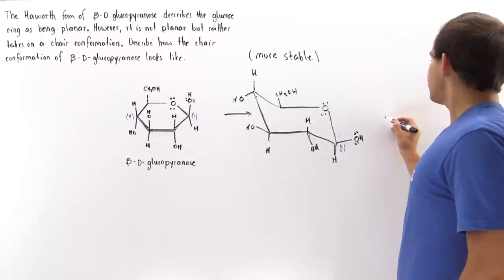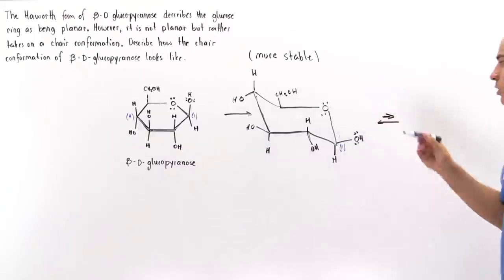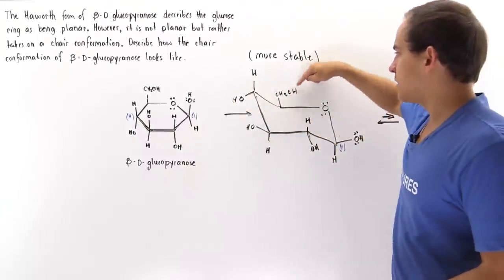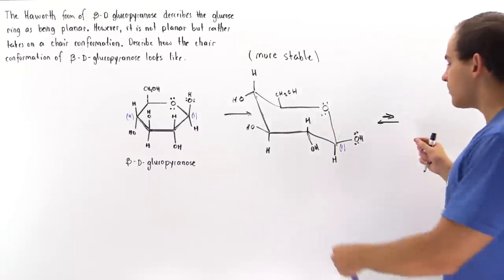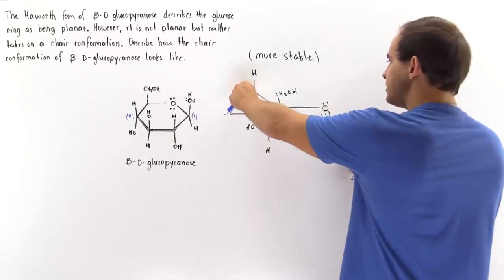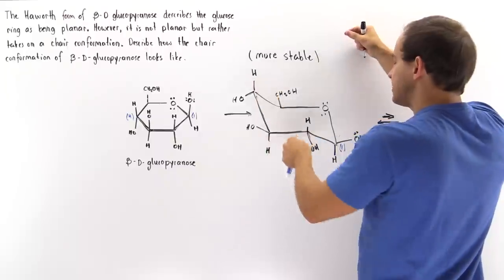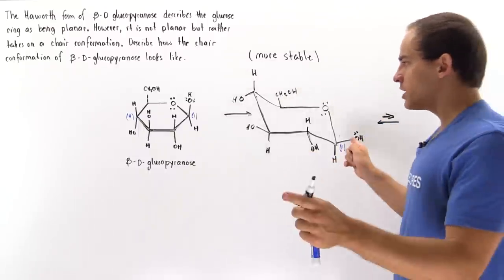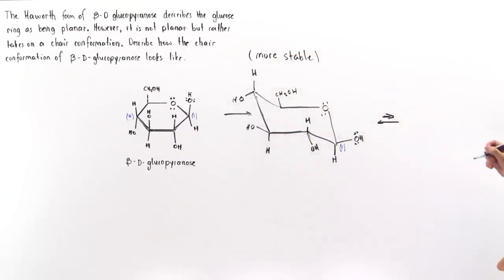This will be the more stable chair conformation. We actually have another chair conformation that will be the less stable one — let's draw that so we know what it looks like. Our equilibrium arrow points toward the more stable one, because all the large hydroxide groups and the primary alcohol all point along the equatorial position, which is the more stable location.